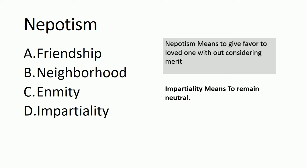That is the opposite of nepotism. Impartiality, option D, is the correct option here. Option A is friendship. Note that friendship and enmity are also antonyms of each other, so here we have discussed two antonym pairs.